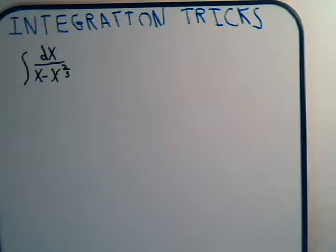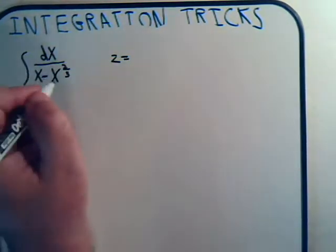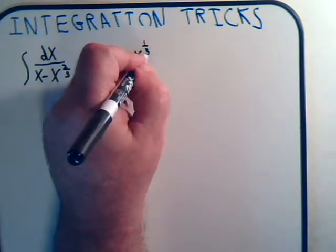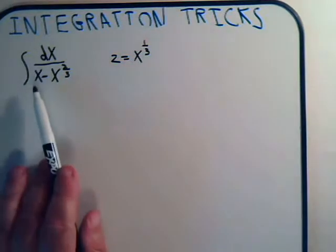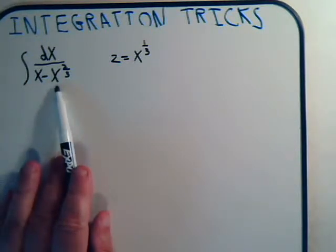And the trick here was to introduce a variable z that equals x to the one-third power. And the reason for trying out the substitution is that this would be z cubed minus z squared.